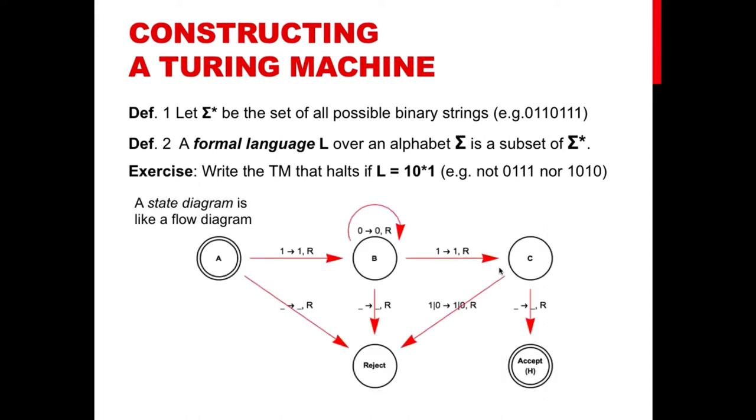So for example, 0111 is not a word in our language L because it is not a word that starts with one, followed by at least a zero, as it is required. So we want to build a Turing machine that recognizes only words in our artificial language L.